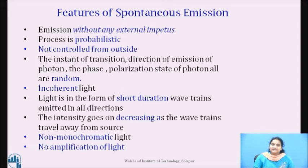The emitted light is incoherent. Light is in the form of short duration wave trains emitted in all directions. The intensity goes on decreasing as the wave trains travel away from the source. The light emitted is non-monochromatic. Here, no amplification of light takes place. It is the process of spontaneous emission that dominates in conventional light sources.